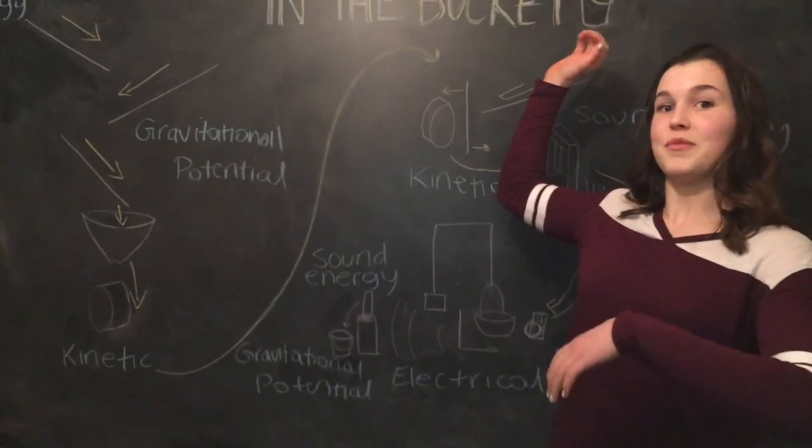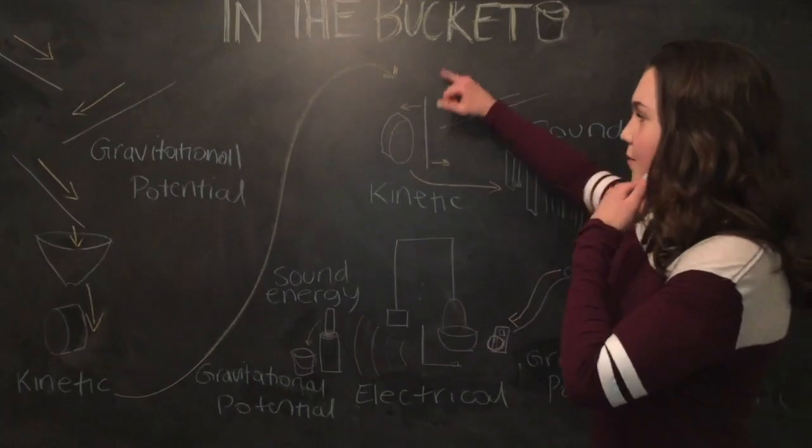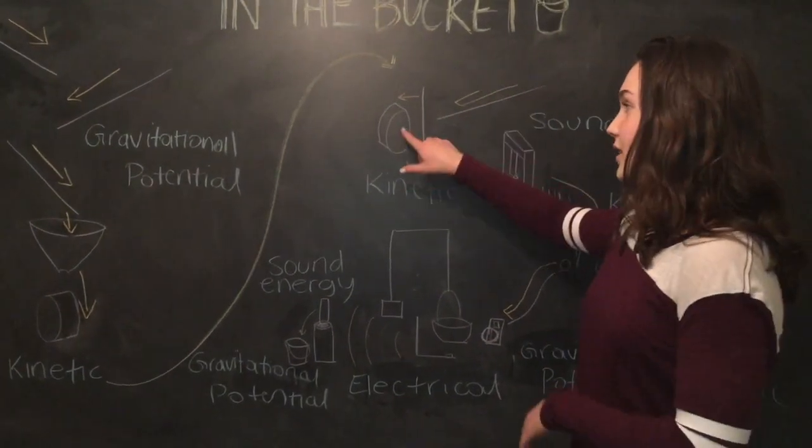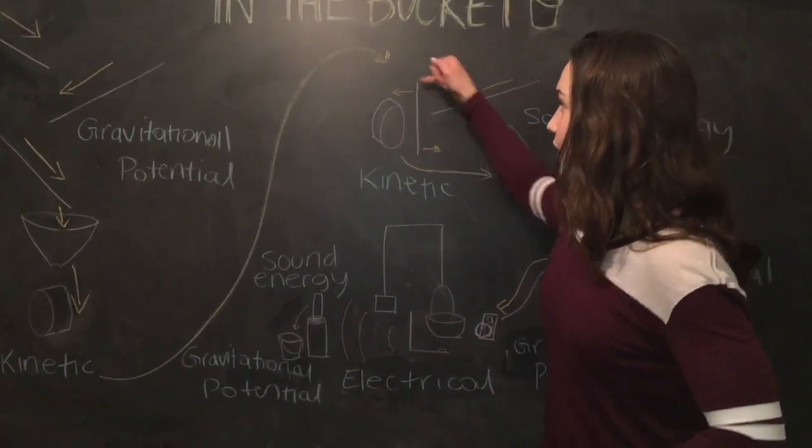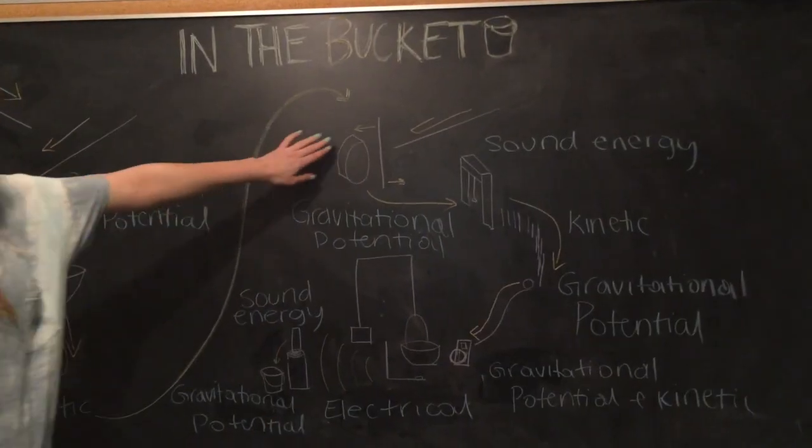It moves this side that way and this side this way, which allows for the tape roll to pass by because of gravitational potential energy. It slides down and it hits the bell which is sound energy.